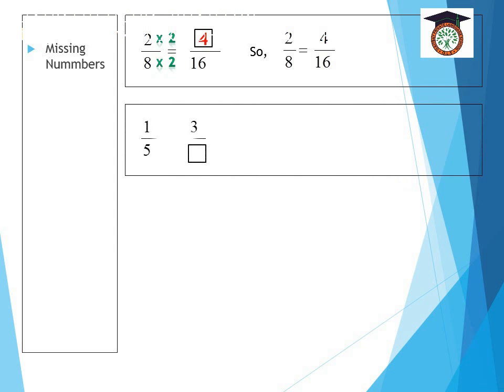Another example. The numbers from left to right are increasing, so I'm going to multiply. And now ask yourself, 1 times what is equal to 3? It's 3. Yes, 1 times 3 equals 3. So 5 times 3 is equal to 15. So 1 fifth is equal to 3 over 15.